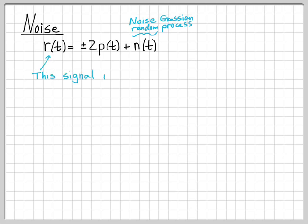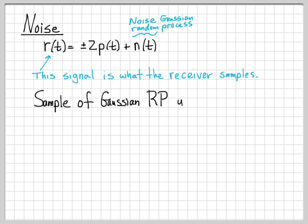R(T) is what the receiver is sampling. Just like before, the receiver is going to sample something to make a decision. The only difference now is we've added the term N(T). What you need to know about random processes for this problem is that when you sample a Gaussian random process — which is what N(T) is — you get a Gaussian random variable.